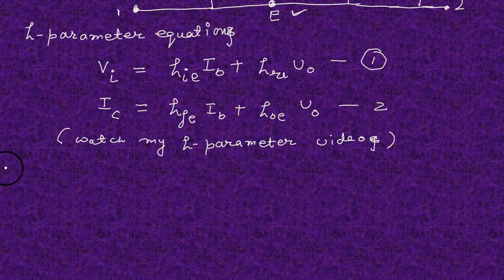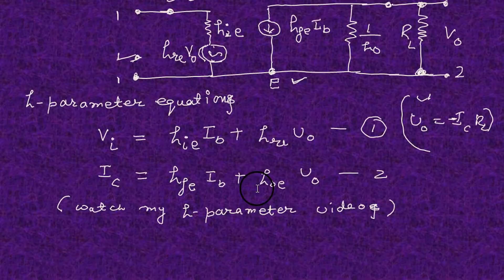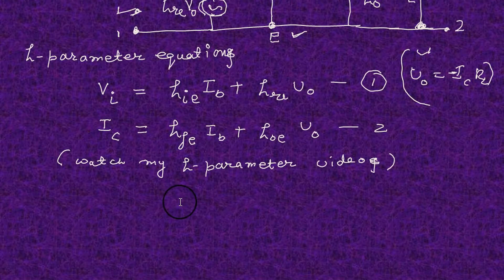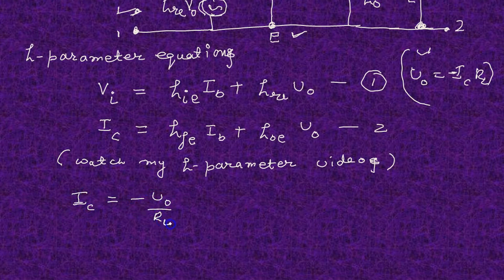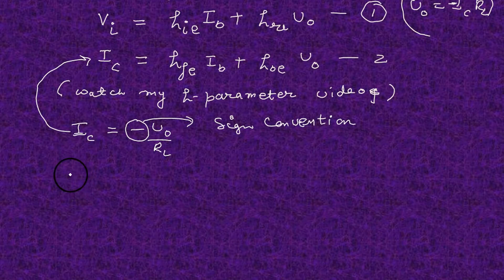From that, because HC is minus V-out upon RL — the minus sign is because of the sign convention. Substituting here and substituting here, and simplifying.